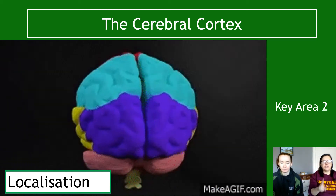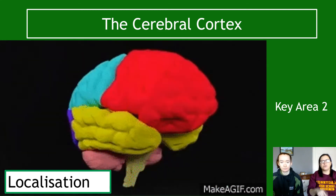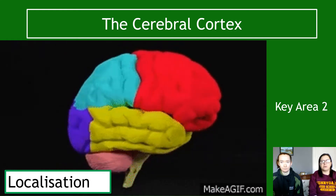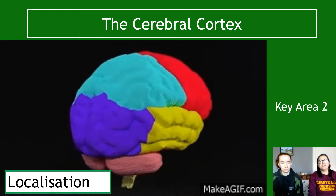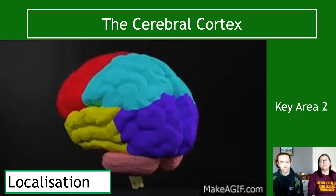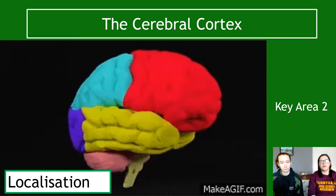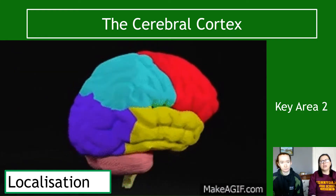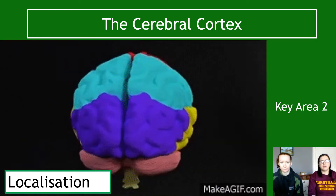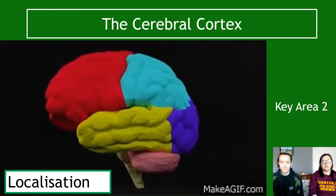This is Key Area 2 of Unit 3 — Neurobiology and Immunology — and this key area is looking at what's titled the Cerebral Cortex. There are three videos on this area, starting with this video, which is about localization.